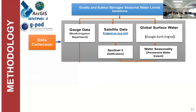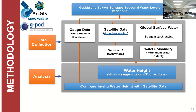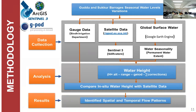We have satellite data acquired from GPOD — Dr. Marco and Dr. Jerome will describe that further. Global surface water is from Google Earth Engine, from which we extracted water seasonality or permanent water surface. In the analysis part, we derived water height using a simple formula. At the end, we compared in-situ water height with satellite data and identified spatial and temporal flow patterns.